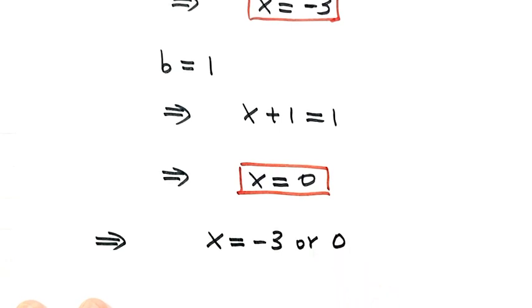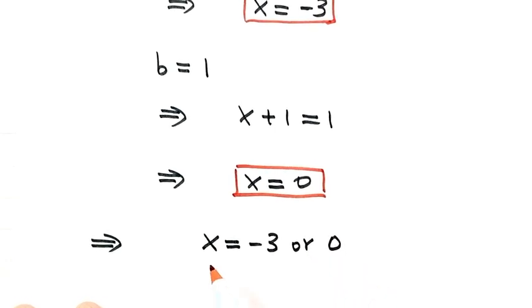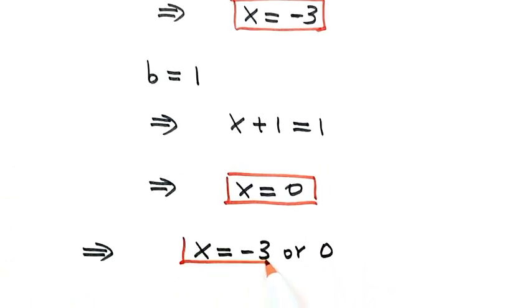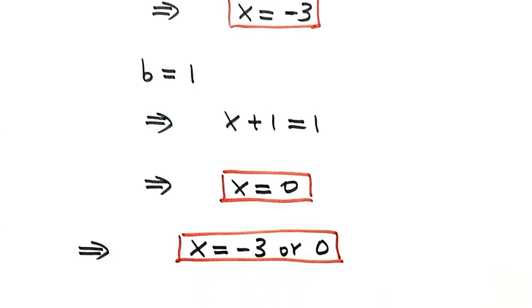Combining both solutions, x = -3 or x = 0. These are the solutions to the equation. Thanks for watching.